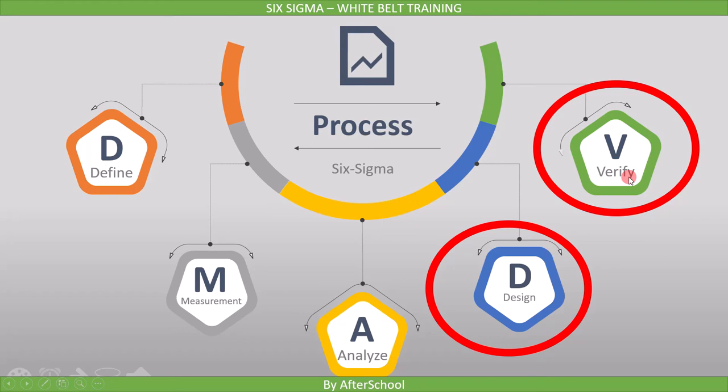Now, let's go through these points quickly. The first phase is D — just like Define the problem in the previous case. Here, we define the goal of our new process.